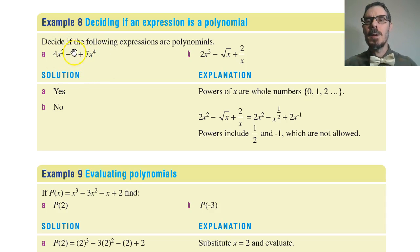It's a sum of whole number powers of the variable x: x to the 4, x to the 2, and x to the 0. This is a polynomial of degree 4.